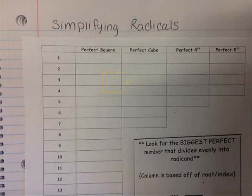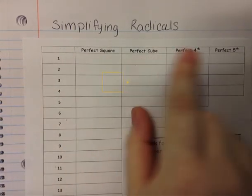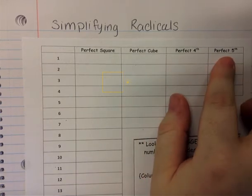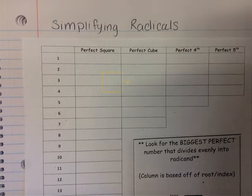This video is on simplifying radicals. When simplifying radicals, the easiest way to do this is if you know your perfect squares, your perfect cubes, your perfect fourths, your perfect fifths — perfect any number. Because when you're simplifying radicals, you want to simplify it down using the perfect squares or the perfect cubes, whichever one it is.